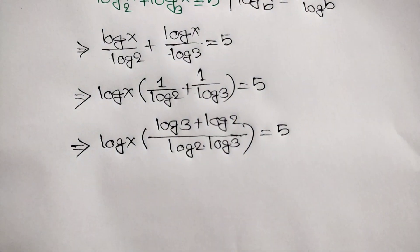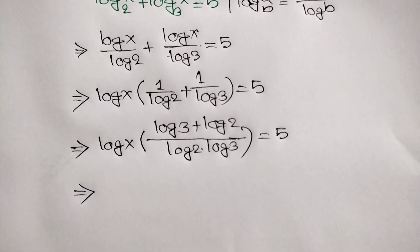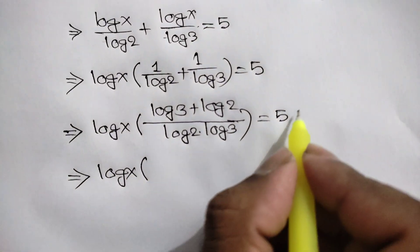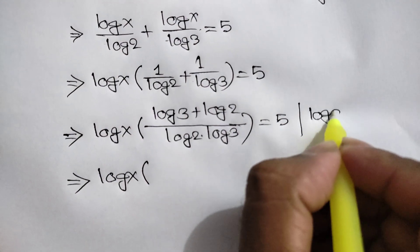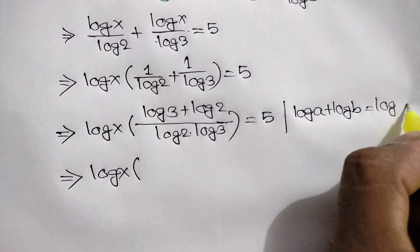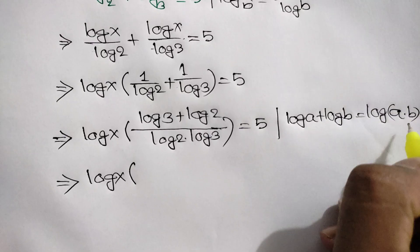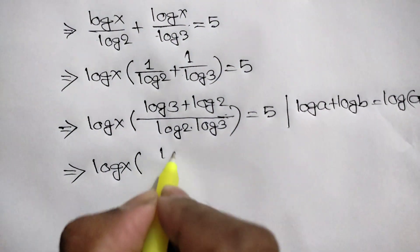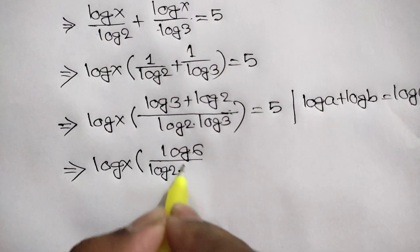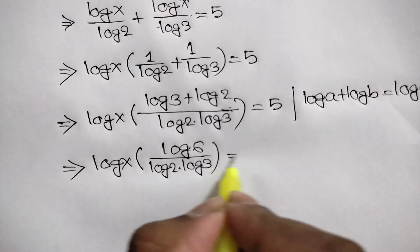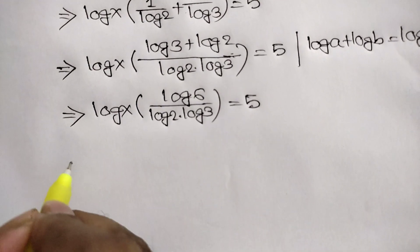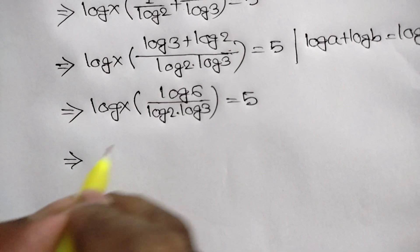Now we know that log of a plus log of b is equal to log of a times b. Applying this rule, log of 3 plus log of 2 becomes log of 6. So we get log of x times log of 6 over log of 2 times log of 3 is equal to 5.